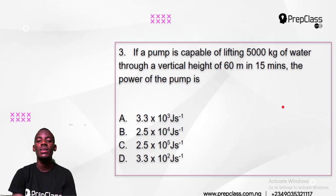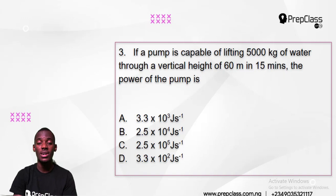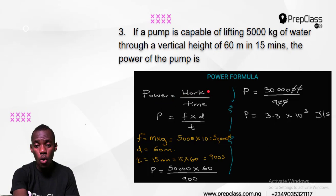Let's take on number 3: if a pump is capable of lifting 5,000 kilograms of water through a height of 60 meters in 15 minutes, the power of the pump is what? Power has a formula that says work over time. Power is just work over time — the rate of work done per unit time is the amount of power you have. The smaller the time it takes to do that work, the higher the power.